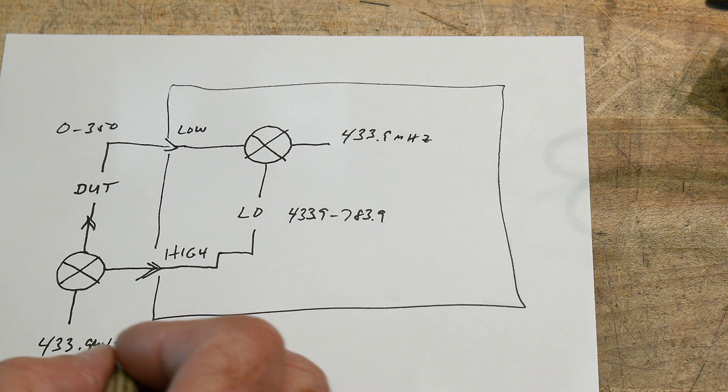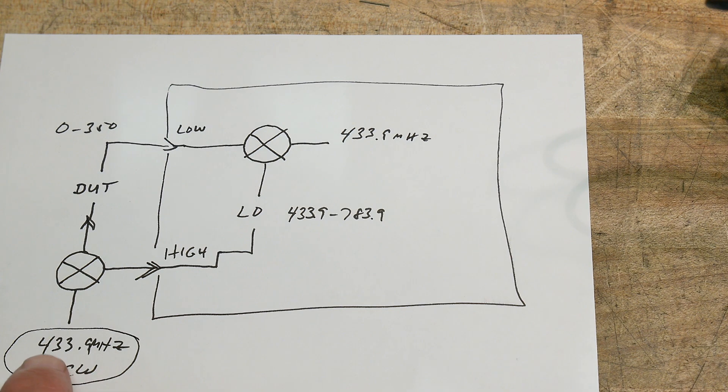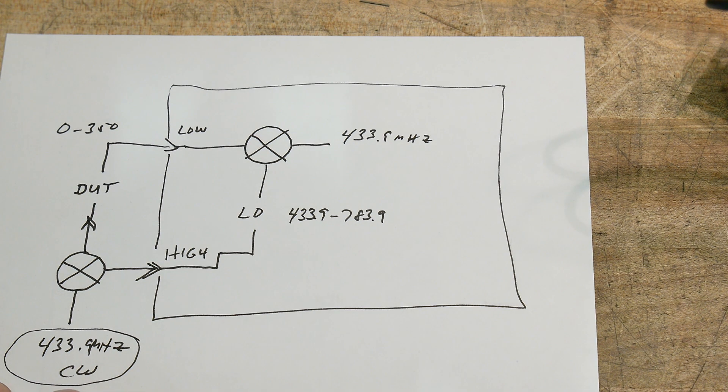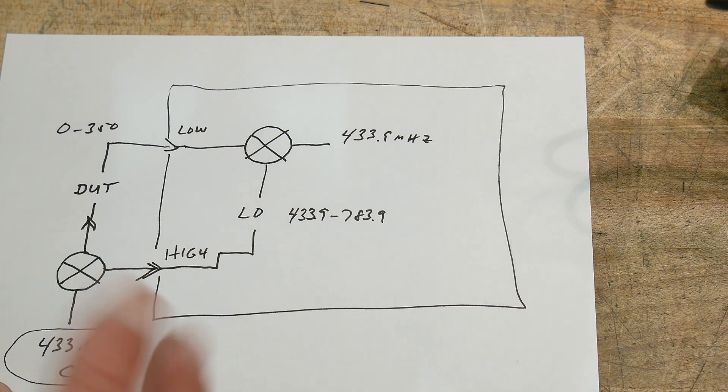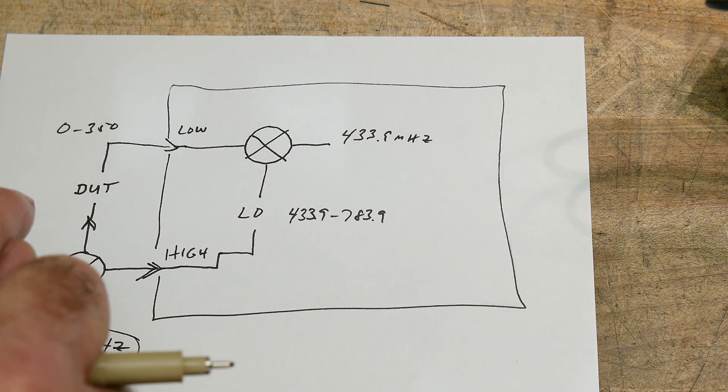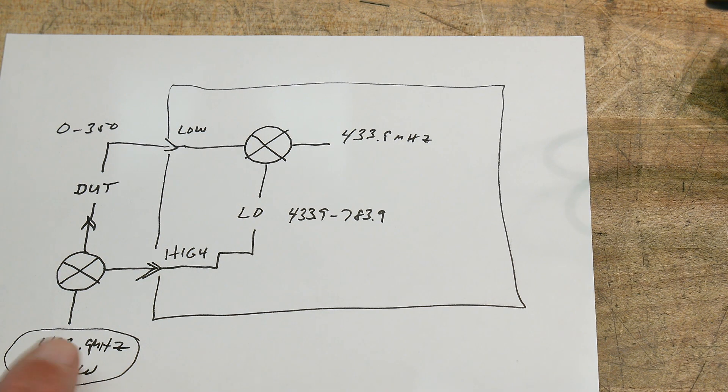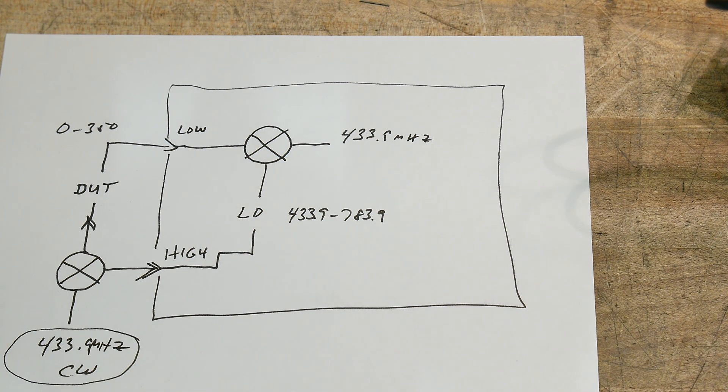It does require you to have a piece of equipment that can generate 433.9 megahertz. And so you need two pieces of equipment now. You need the external mixer and you need some type of external source. And so let's hook this up and see if it works.